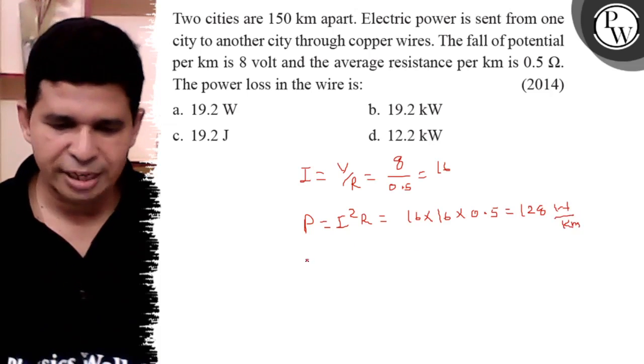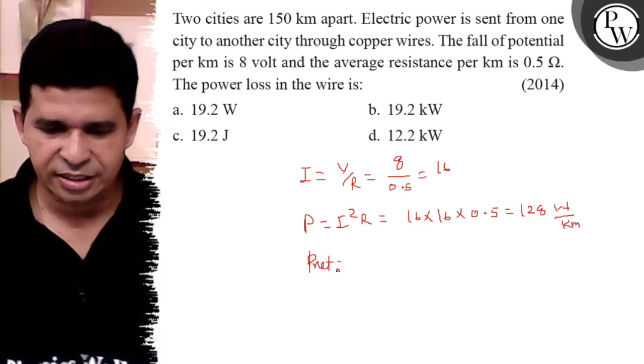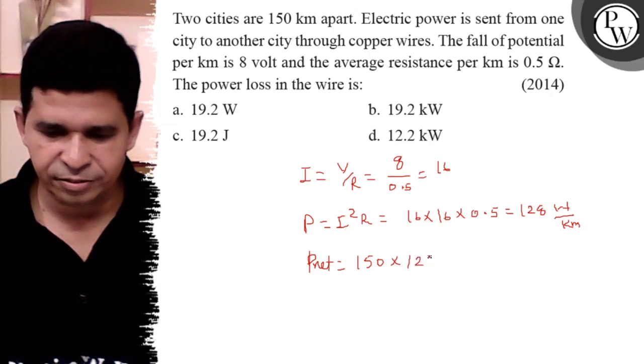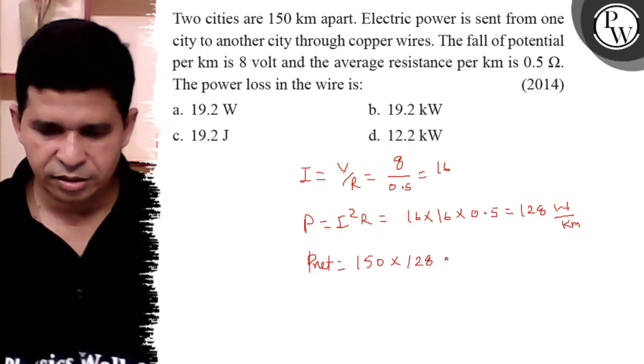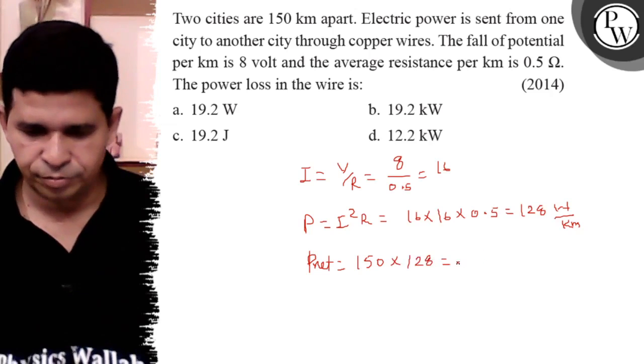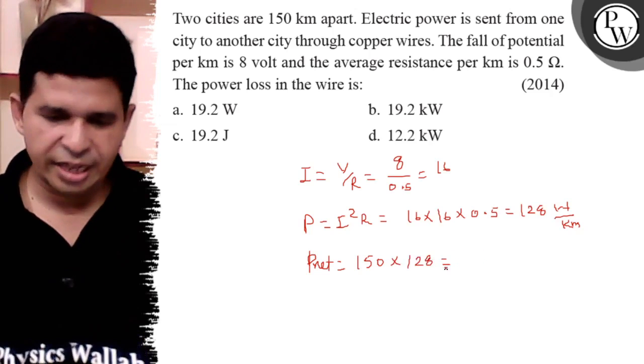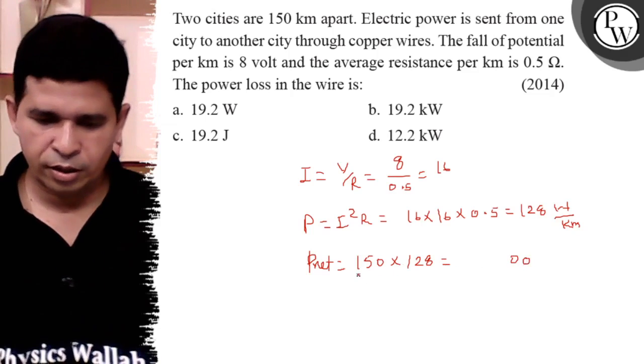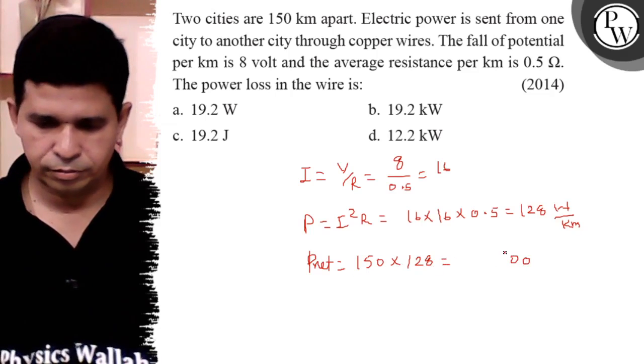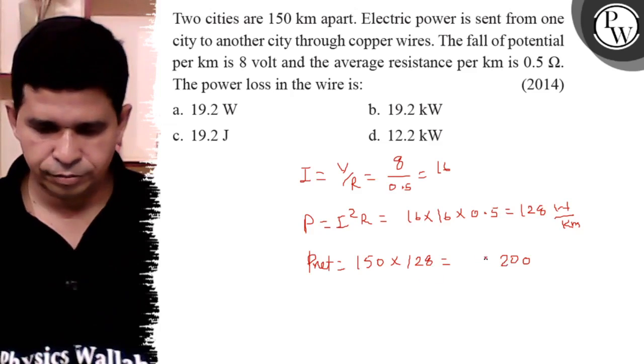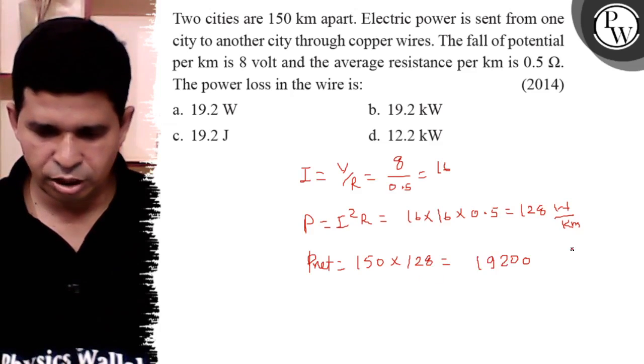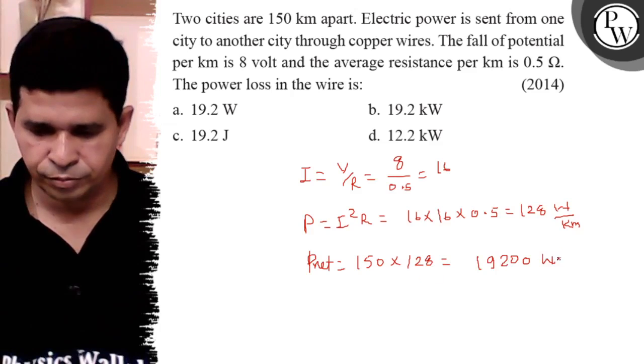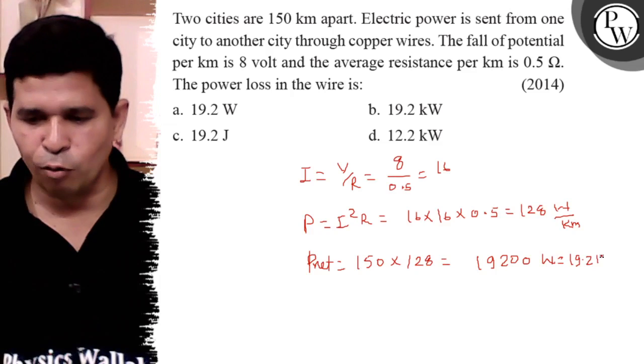Now multiply it, so power net is equal to 150 kilometer into 128, so it is 19,200 watt. So it is 19.2 kilowatt.